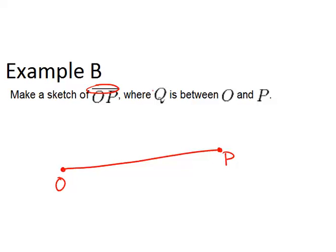And it just says Q is between O and P, so in math that implies that it's actually on the same segment, and Q could be anywhere on that segment, so I'm just going to put it right here, but it could be anywhere.